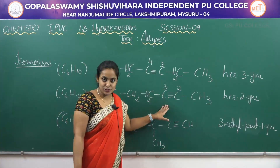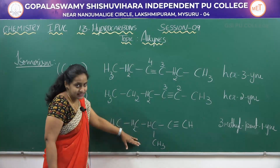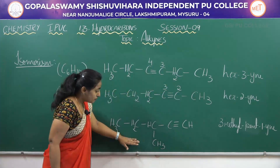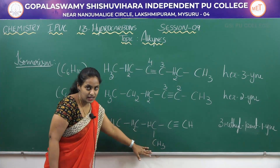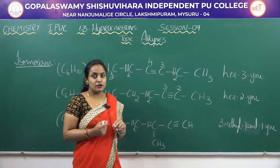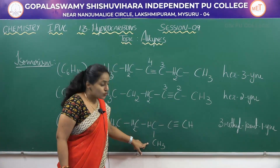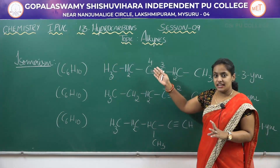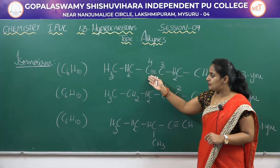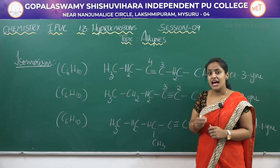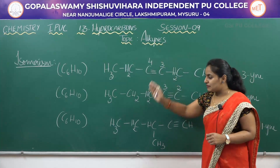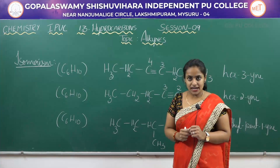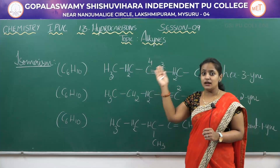Similarly, when you compare examples one and three, example one has a straight chain while example three is branched. Therefore there is a difference in the arrangement of carbon atoms. Compounds one and three exhibit chain isomerism. We can conclude that alkynes exhibit both chain isomerism and position isomerism — compounds one and two show position isomerism, and compounds one and three show chain isomerism.